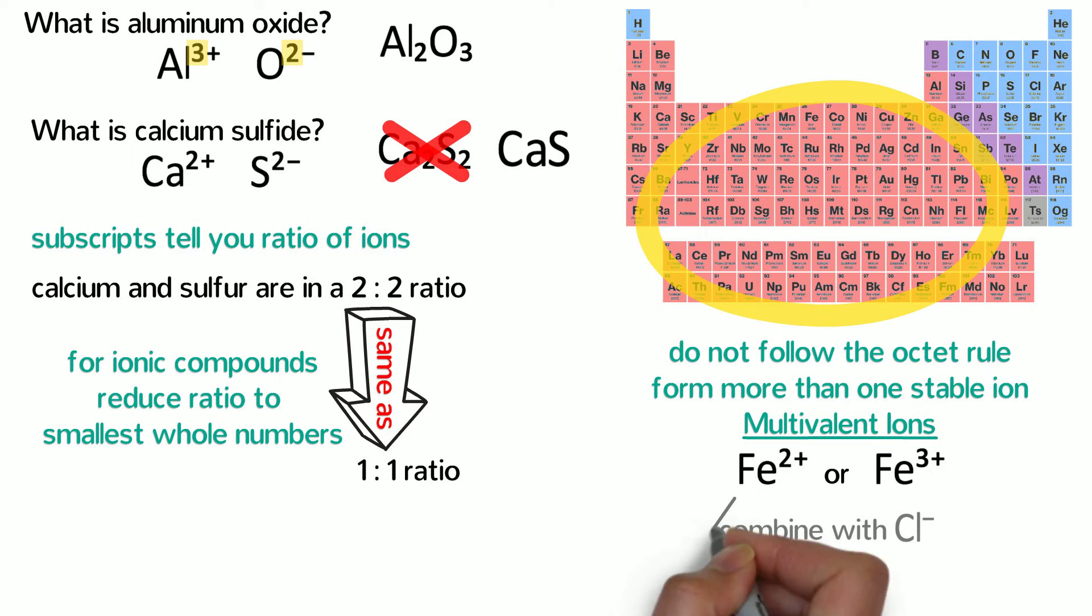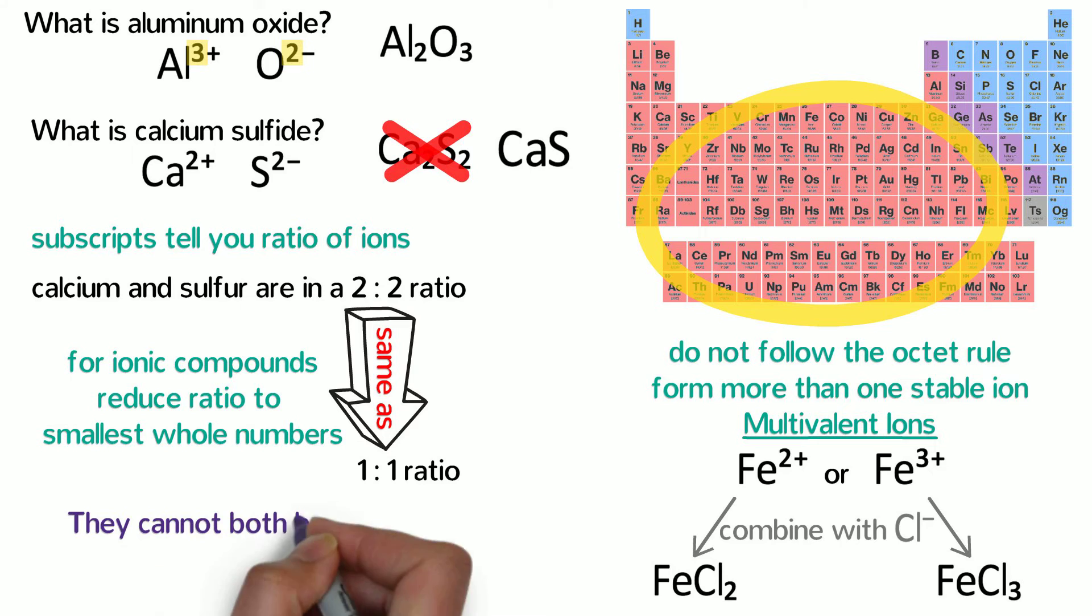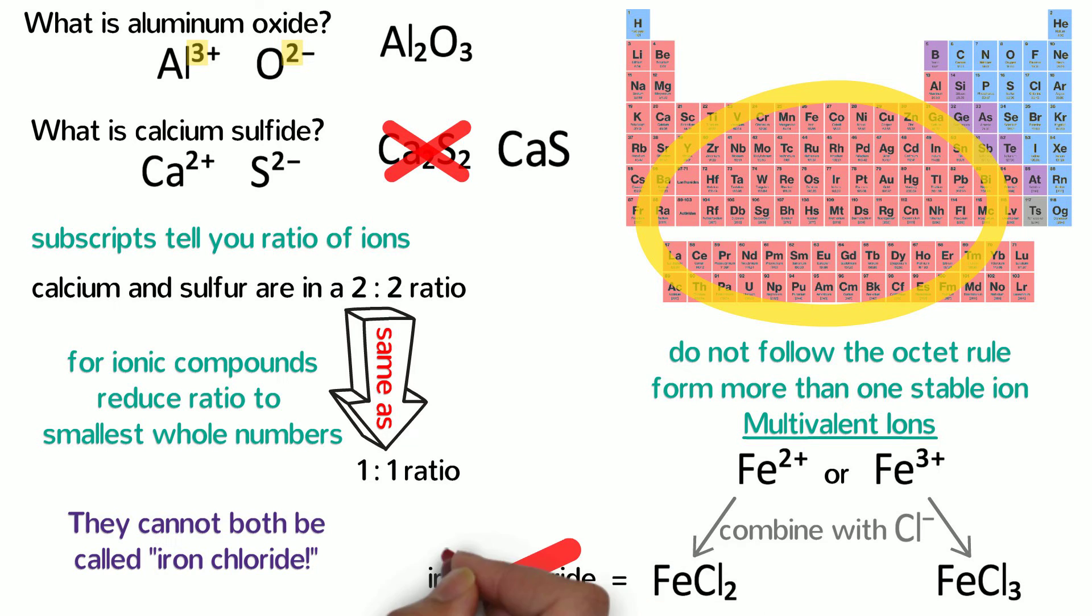When combined with chloride, for example, the iron 2 ions make FeCl2 and the iron 3 ions make FeCl3. So what do you call those compounds? They cannot both be called iron chloride. You might be tempted to name them with covalent prefixes like iron dichloride, but that would be wrong.